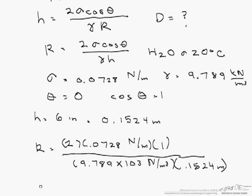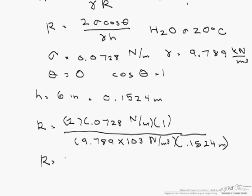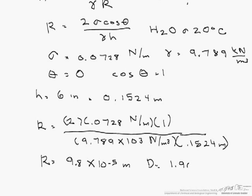So when we calculate this radius, it is 9.8 times 10 to the minus 5 meters, or our diameter is 1.96 times 10 to the minus 4 meters, which equals 0.195 millimeters.